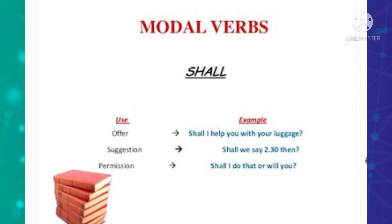'Shall' is used to make an offer, suggestion, or ask permission. For example, making an offer: 'Shall I help you with your luggage?' Suggestion: 'Shall we say 2:30 then?' — used when discussing a meeting time. Permission: 'Shall I do that, or will you?' More polite ways to ask are 'could' or 'may.' 'Shall' is more formal than 'could' and 'may.'